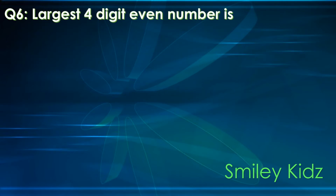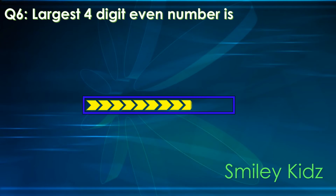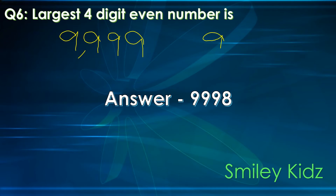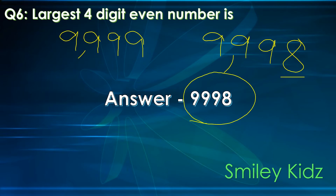Question number 6. What is the largest 4-digit even number? Your time starts now. The correct answer is 9,998. The greatest 4-digit number is 9,999, but it is an odd number, so we take its predecessor. 9,998 — here 8 is an even number, so the number is even. Therefore, the largest 4-digit even number is 9,998.